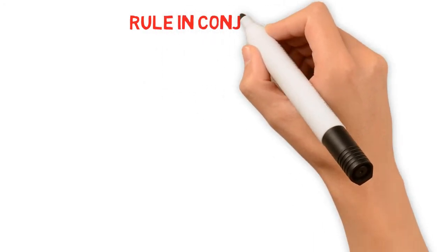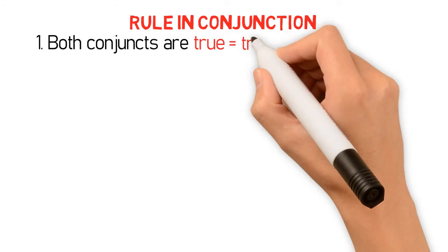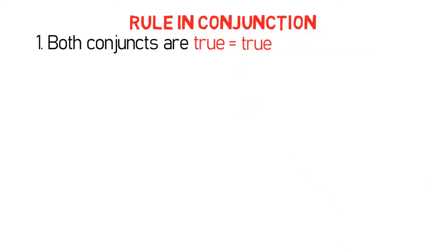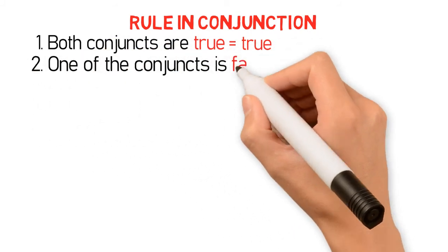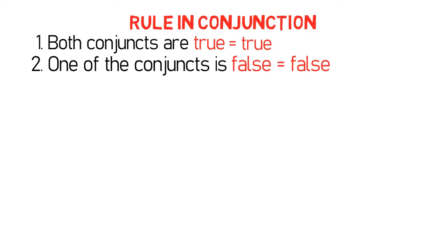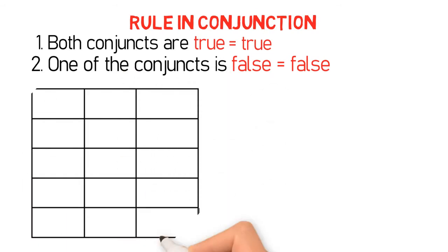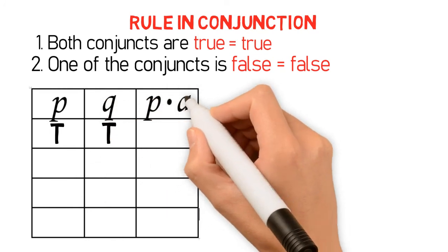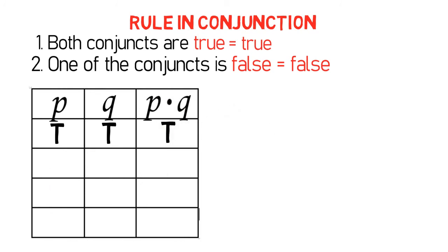At this point, let's proceed to the rules in conjunction. The rules state: first, a conjunction is true if and only if both conjuncts are true. And second, if at least one of the conjuncts is false, then the conjunction is false. Let me illustrate this point in a truth table. If P is true and Q is true, then P · Q is true. If P is true and Q is false, then P · Q is false. If P is false and Q is true, then P · Q is false.